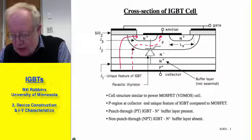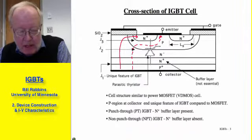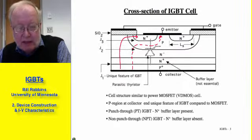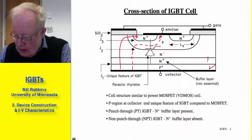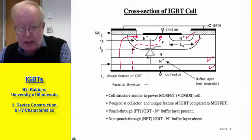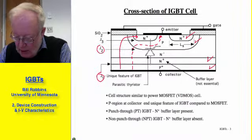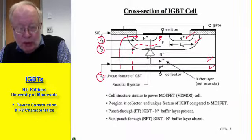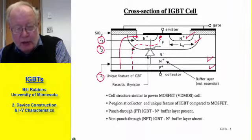The desired path is the one shown as a solid line. The undesired path between collector and emitter is shown as a dotted line. The P-type region at the collector is a unique feature of the IGBT. The device has a four-layer structure composed of a P-plus region, an N-type region, the P-type body, and finally the N-plus emitter. Looking at that, you can see why the three junctions are labeled J1, J2, and J3. We have a built-in parasitic thyristor — that is the price we pay for having the injecting contact.